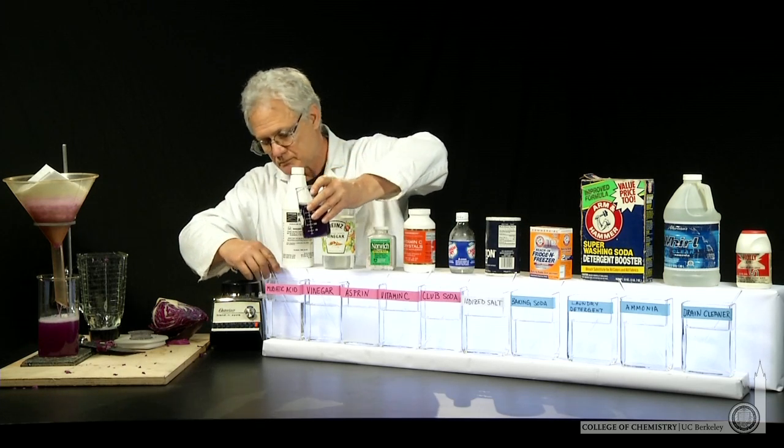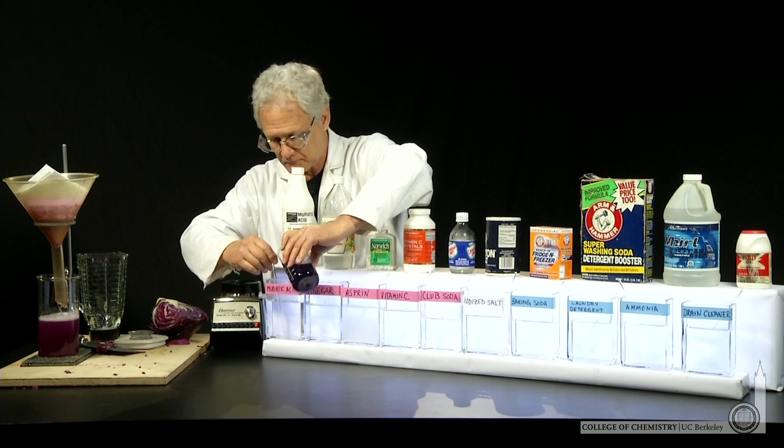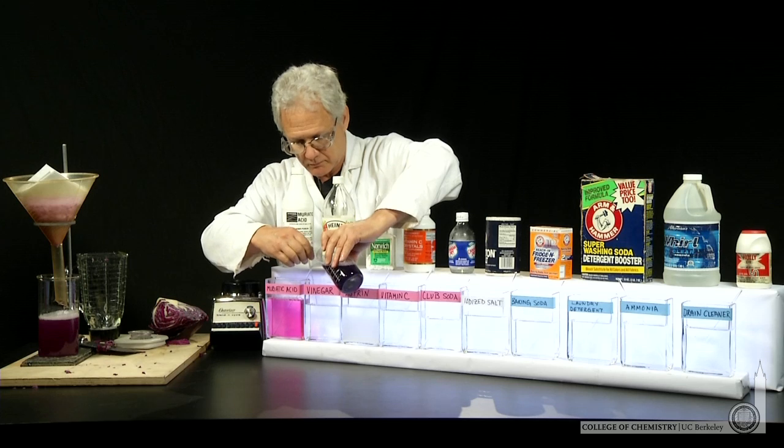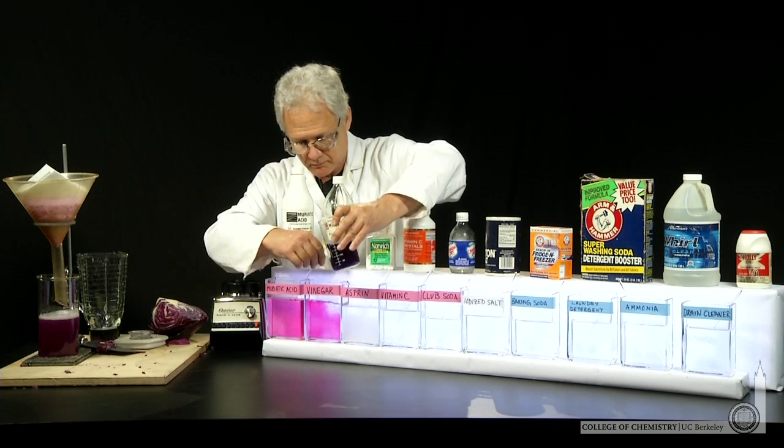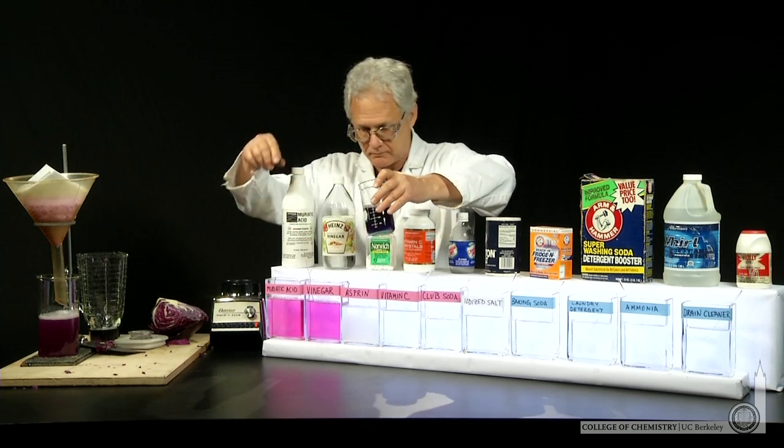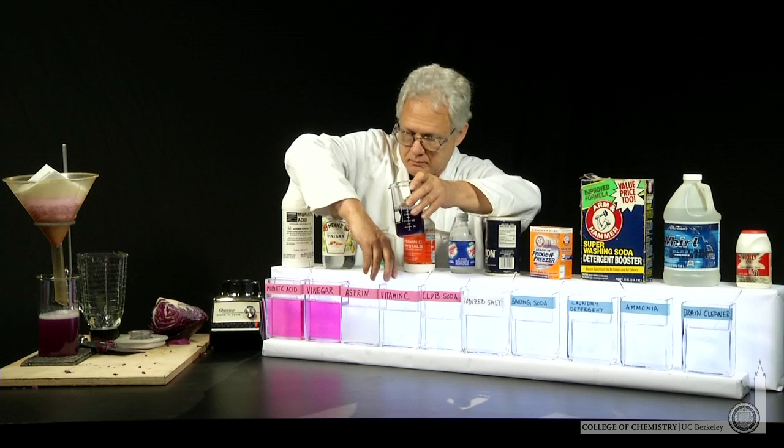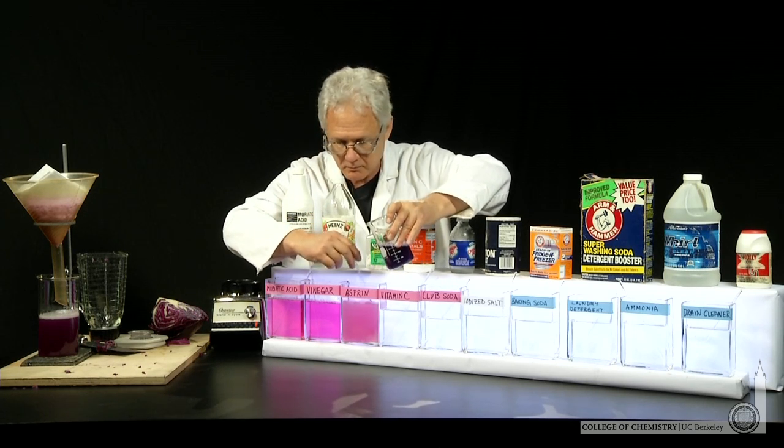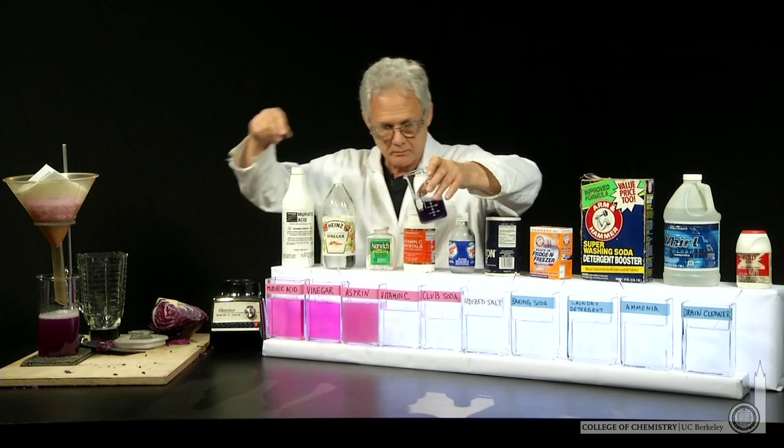This is cabbage juice added to muriatic acid, a cleaning product, and you can see that's an acidic solution and the cabbage juice turns pink. Vinegar also acidic. Aspirin, that's acetylsalicylic acid, also turns cabbage juice pink.